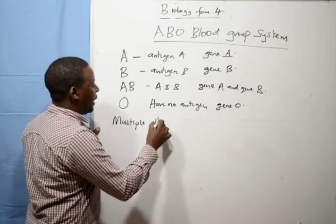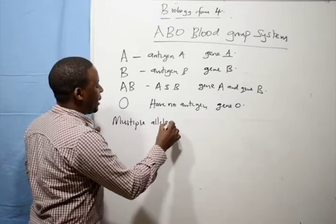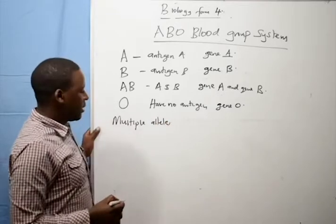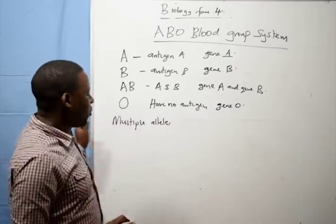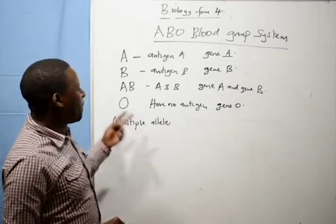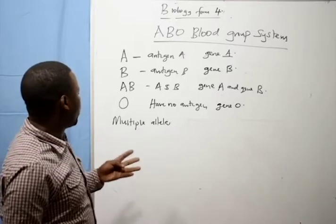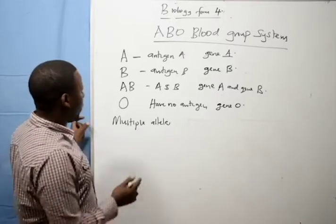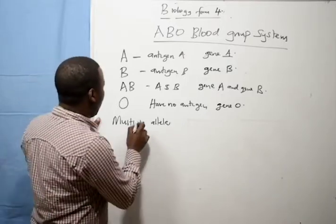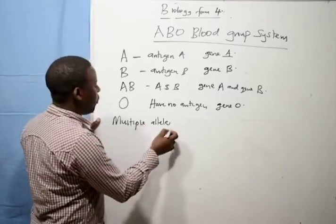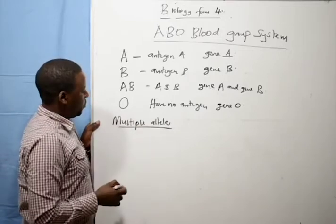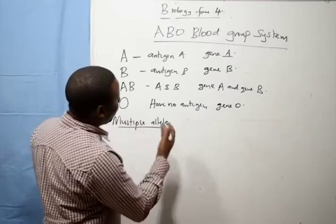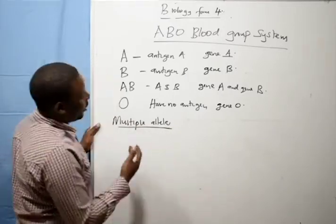Multiple alleles is one of the few characteristics in humans that is controlled by more than two genes. We call it a case of multiple alleles.